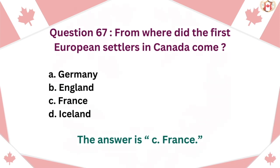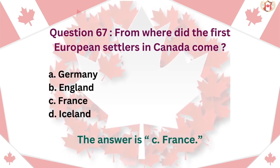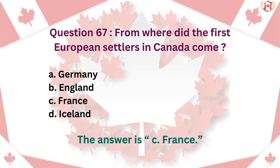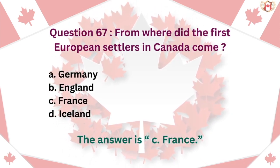Question 67: From where did the first European settlers in Canada come? A. Germany, B. England, C. France, D. Iceland. The answer is C. France.